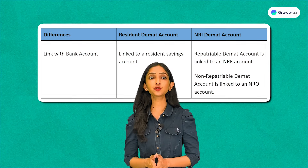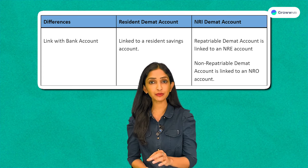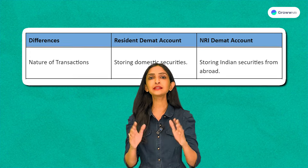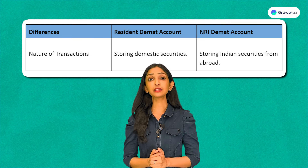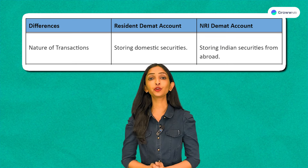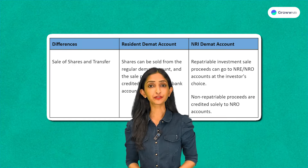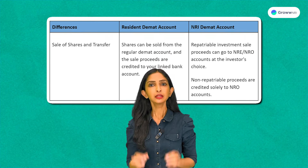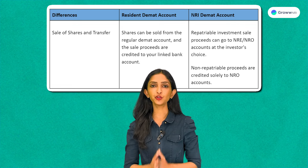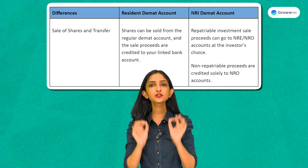A resident DMAT account links to a resident savings account, while an NRI DMAT account links either to an NRE account for repatriable transactions or to an NRO account for non-repatriable ones. Similar to regular savings accounts but for stocks, shares are credited when bought and debited when sold — this is why your DMAT account must be connected to trading and savings accounts for seamless transactions. When selling shares in a resident DMAT account, the money is credited to the linked bank account. For NRI DMAT accounts, repatriable proceeds can go to NRE or NRO accounts, while non-repatriable proceeds are credited solely to NRO accounts.